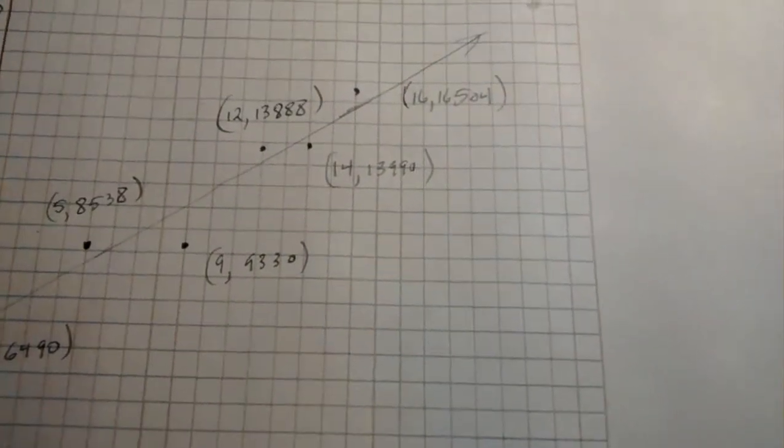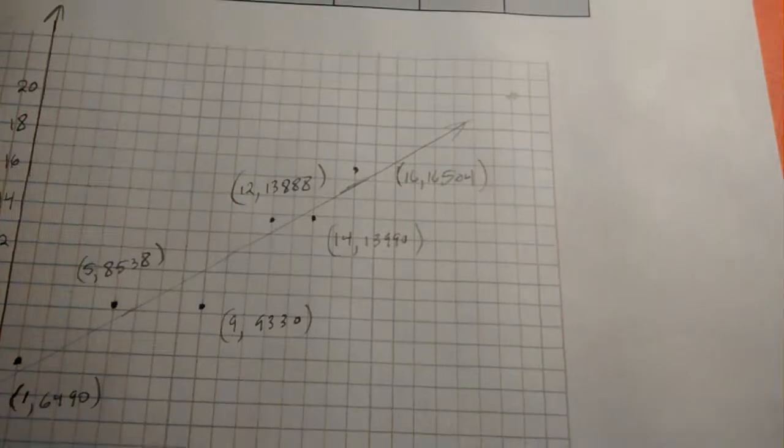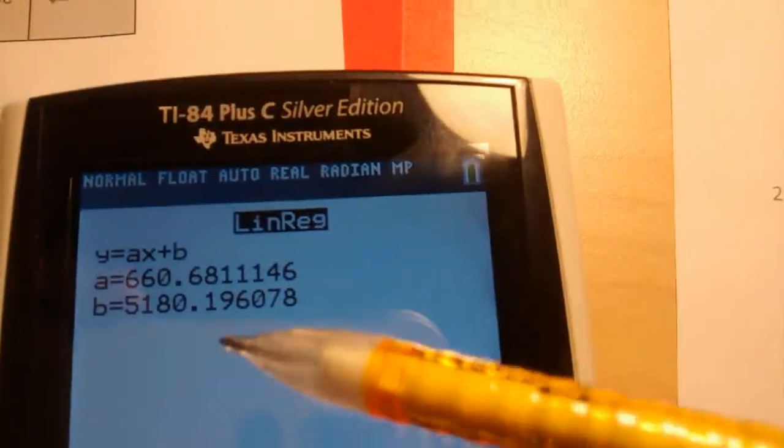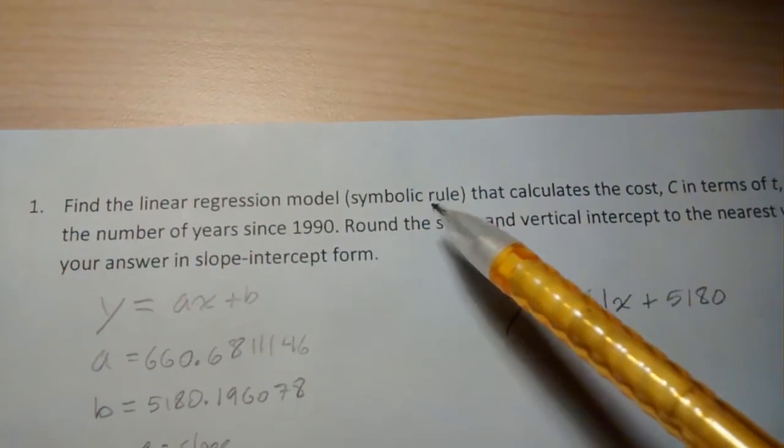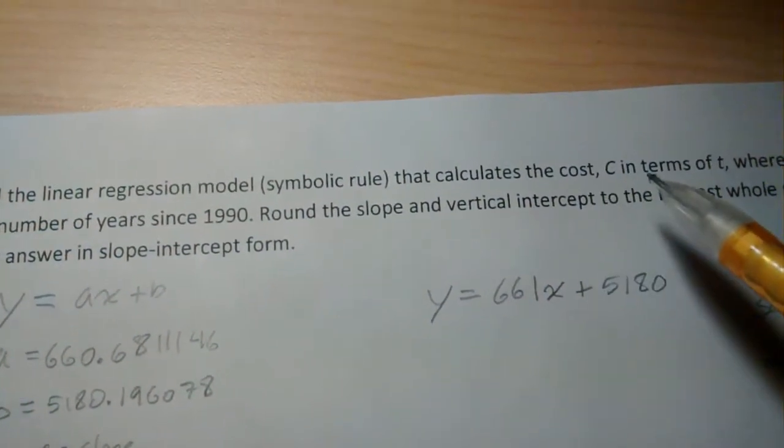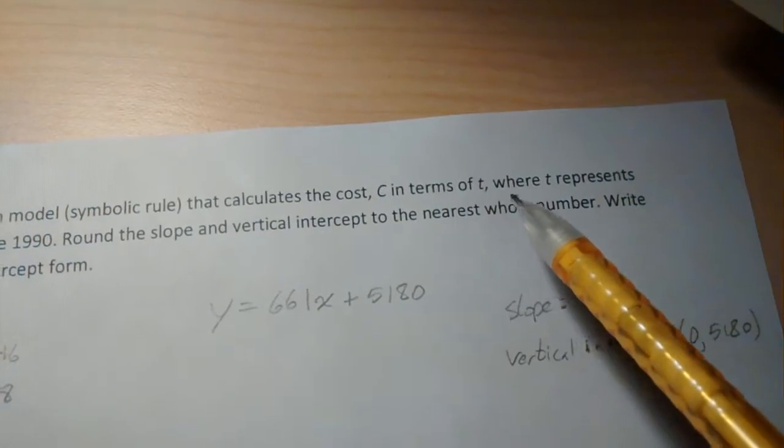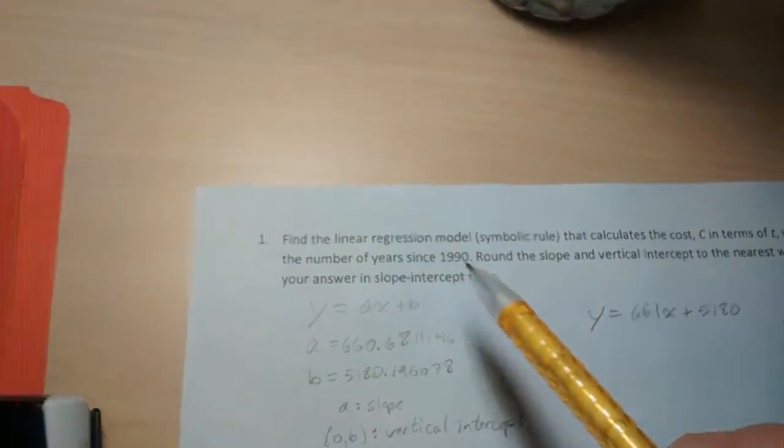A couple things about this. Certainly that's a lot of decimals to deal with, so often I'll tell you to round. Let's look at number one. Find the linear regression model, the symbolic rule, that calculates the cost C in terms of T, where T represents the number of years since 1990.